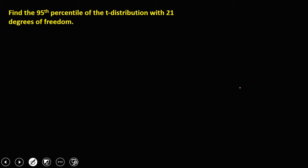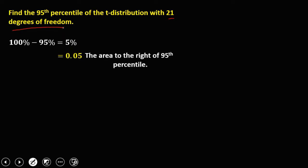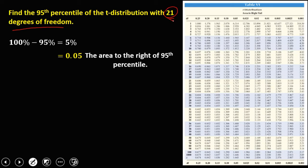Find the 95th percentile of the t-distribution with 21 degrees of freedom. First, we need to compute the area on the right of the 95th percentile. Using the equation: 100 minus 95 equals 5%. Converting to decimal, that's 0.05 — this is the area on the right of the 95th percentile. To solve for the t-value, degrees of freedom is 21, area is 0.05.